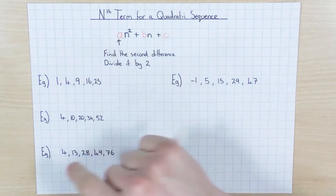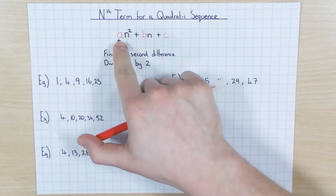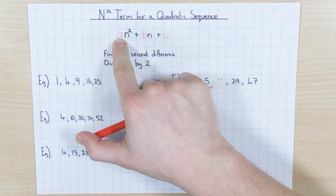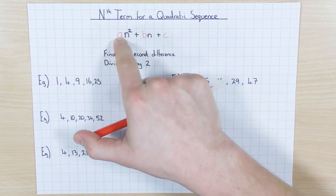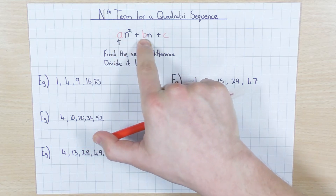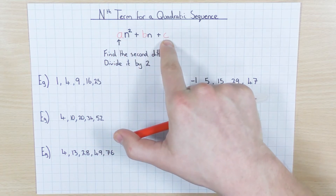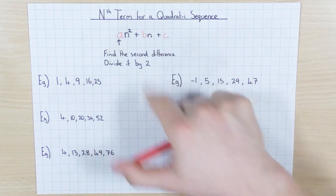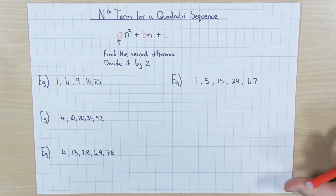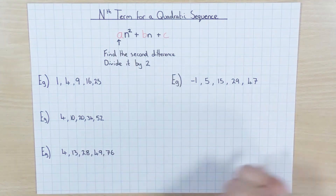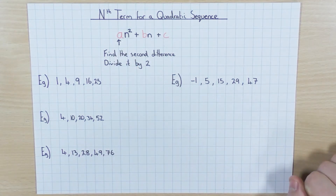We might also have numbers — so instead of having 'a' it could be a number, instead of having 'b' it could be a number, and obviously 'c' again could be a number. So that's what we need to work out: a, b, and c. We'll start off with a, because it's nice and easy.